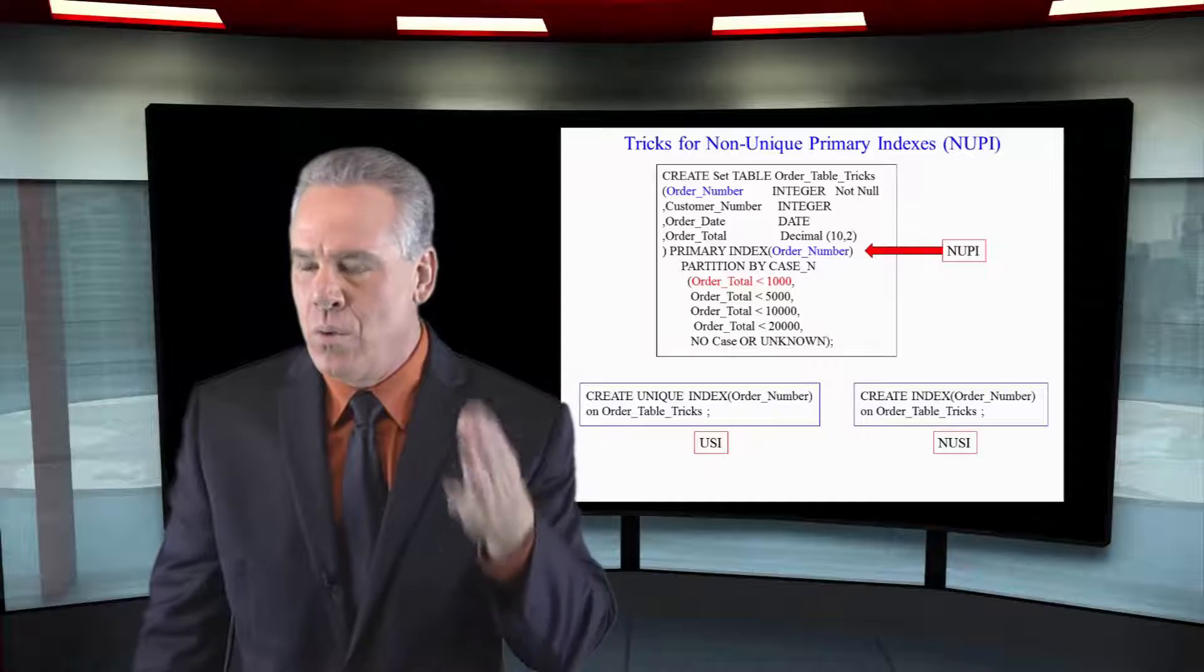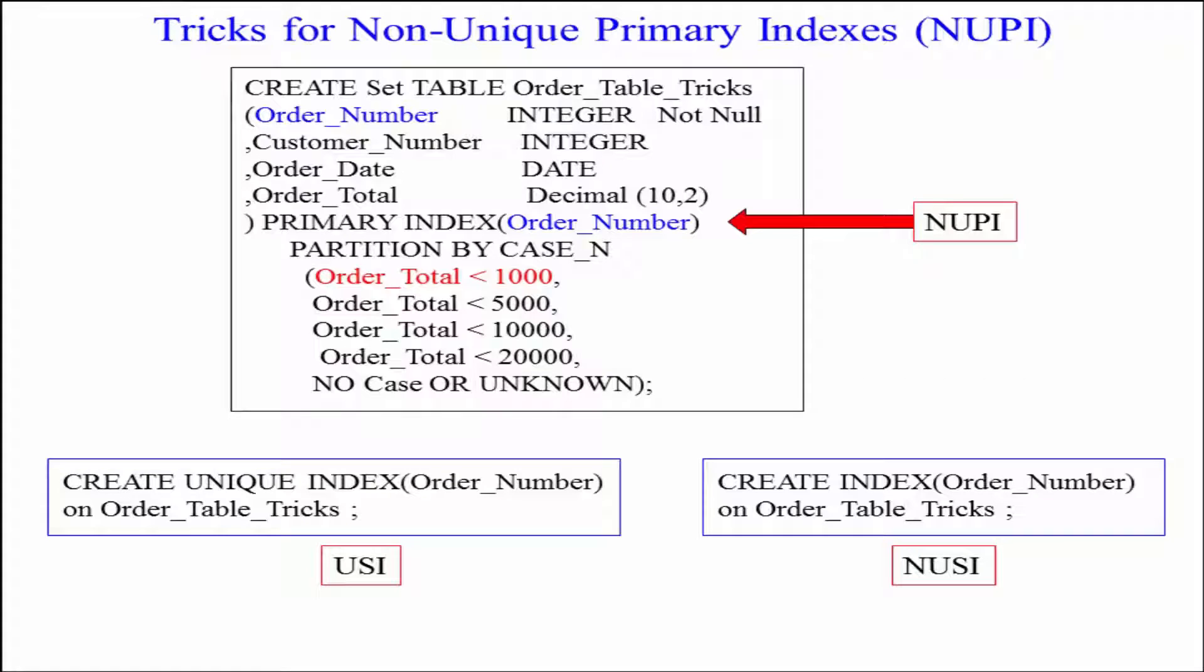So get ready for this. I've created the non-unique primary index on order number partitioned by order total, and then I come back, and I can actually create a unique secondary index on order number. It's going to make it unique, and it's actually going to find a way to find that row in a 2-amp operation much quicker on any lookups where order number equals 123456. This is a brilliant technique.